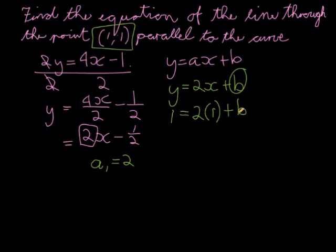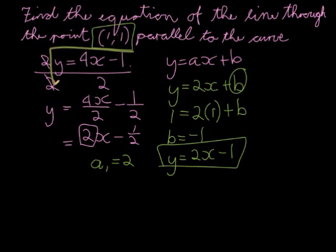Then I just solve for b. Now b will be equal to negative 1. When I solve it, that means y = 2x - 1. This is the equation that is parallel to that line and is passing through the point (1,1).